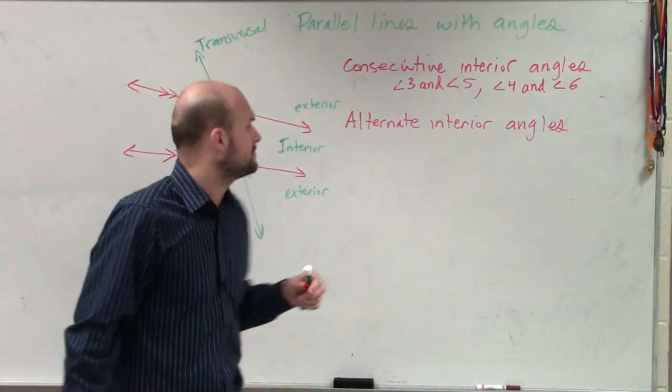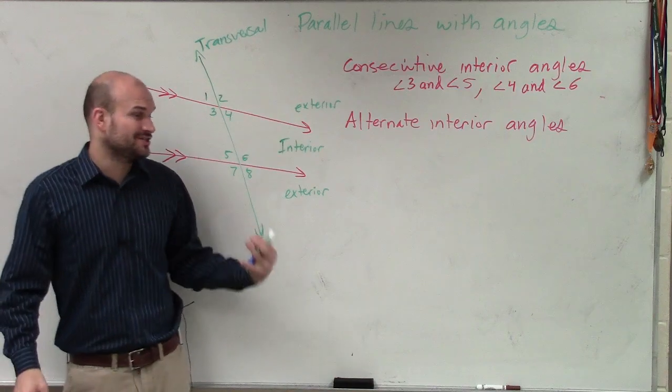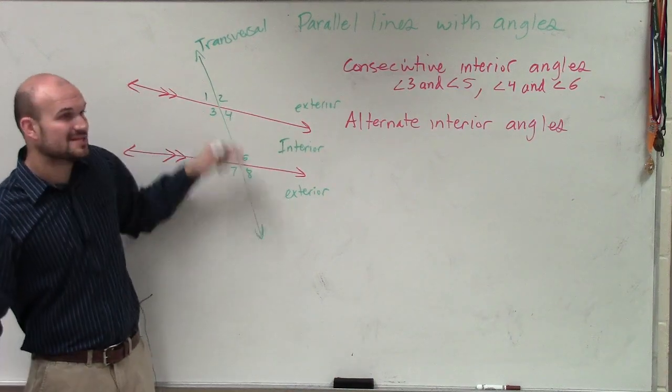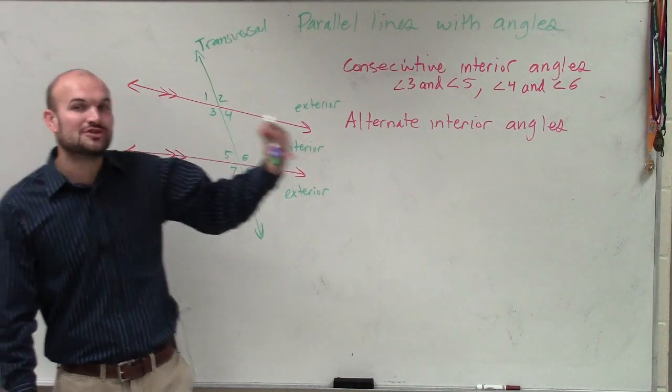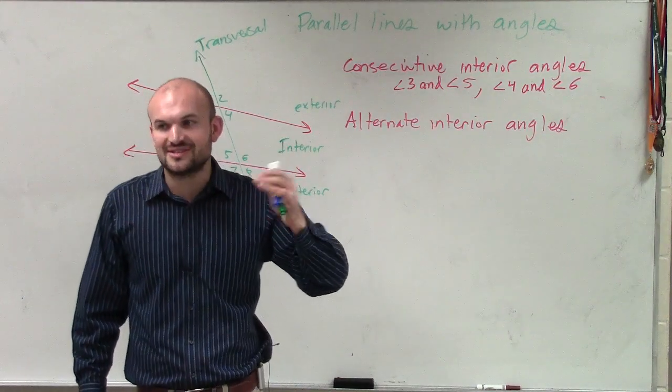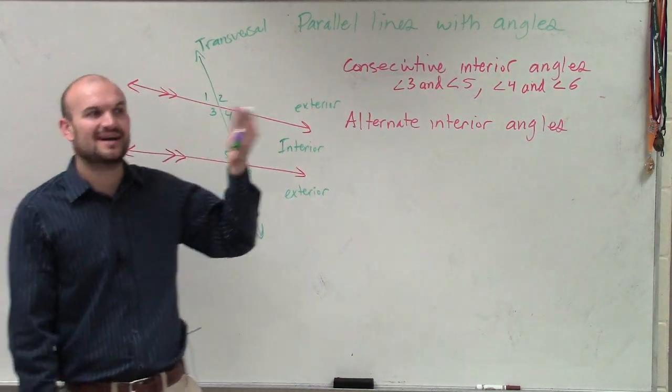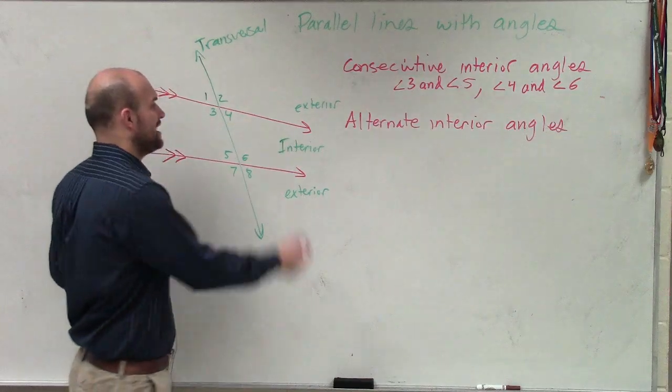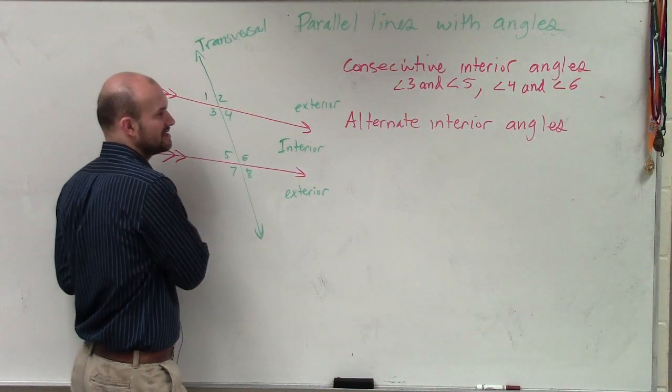Tyler, you just need to be looking up here. So we're looking at alternate interior angles. Consecutive was on the same side, so alternate needs to be on alternating sides - one on the left side, one on the right side. But they're not going to be straight across. We'll talk about angles 3 and 4 in a second.